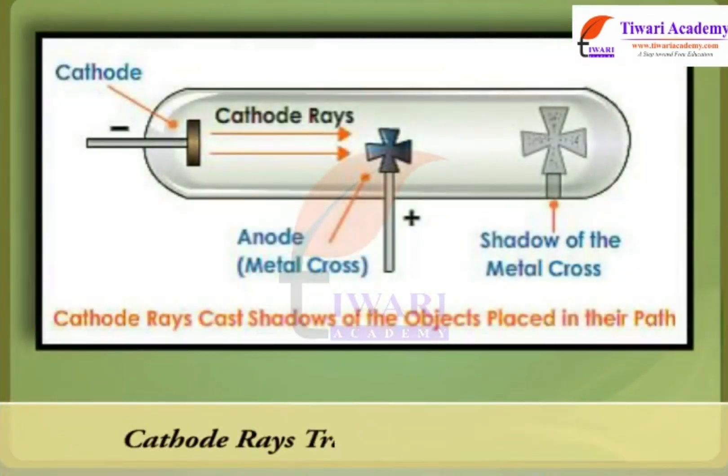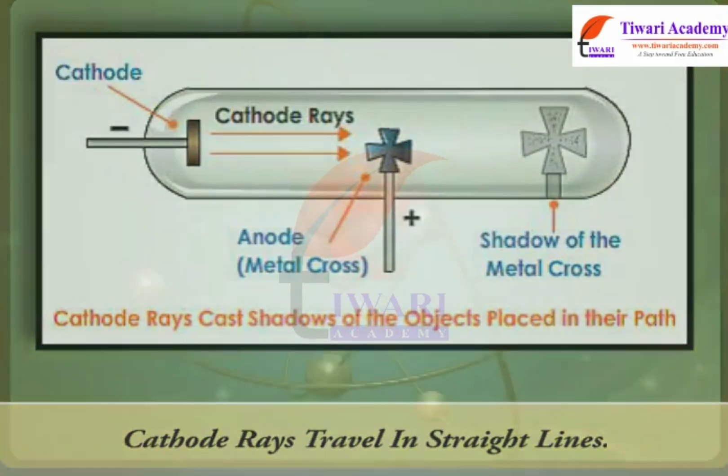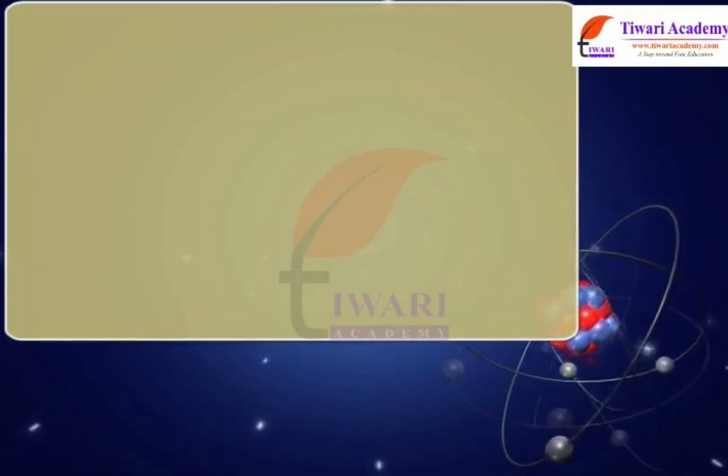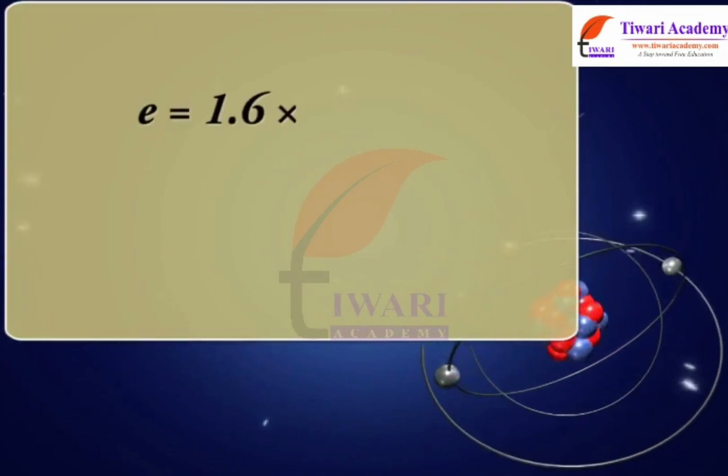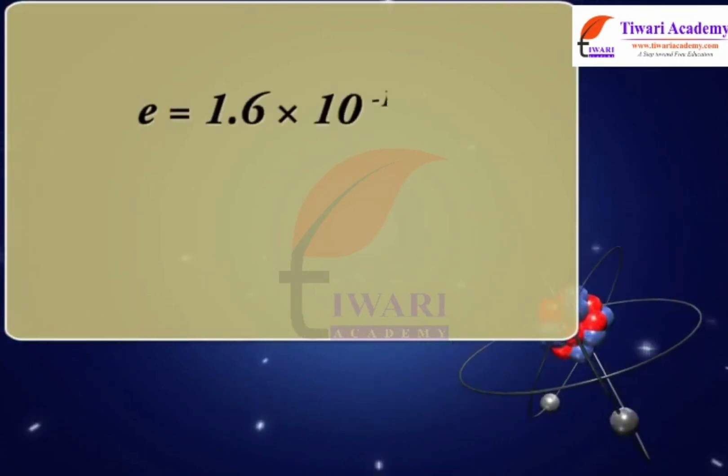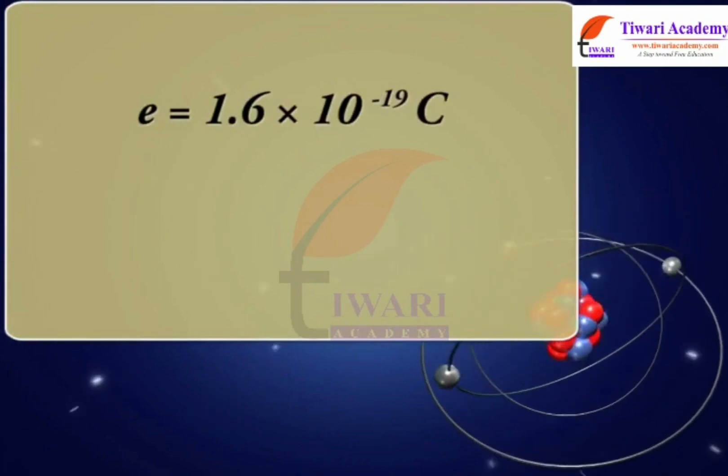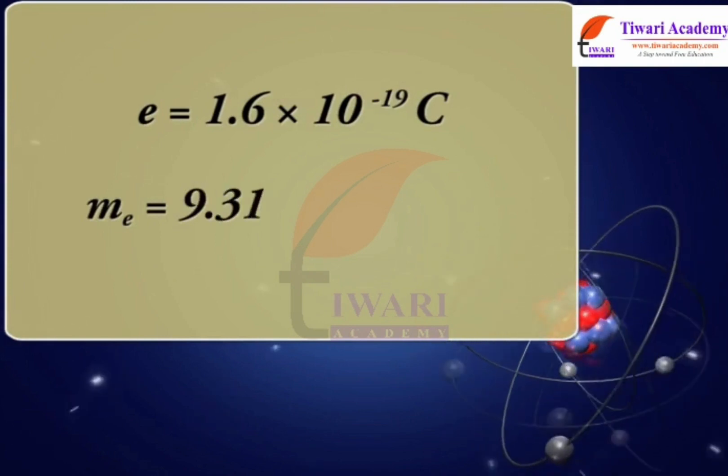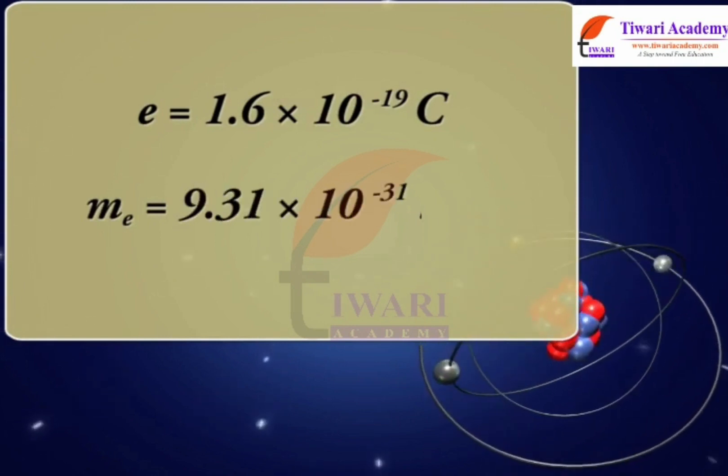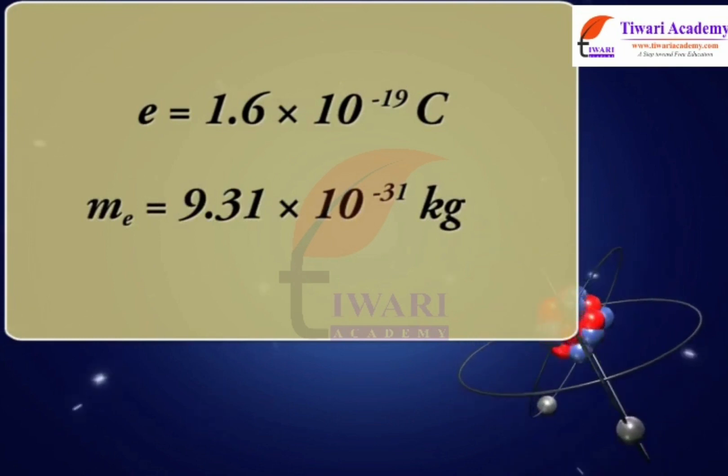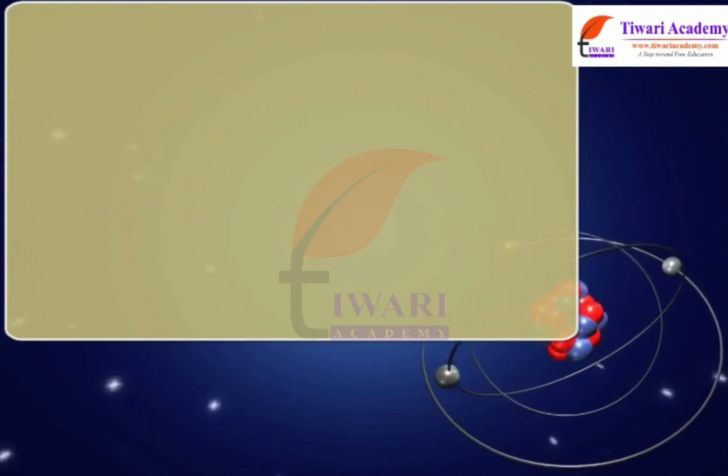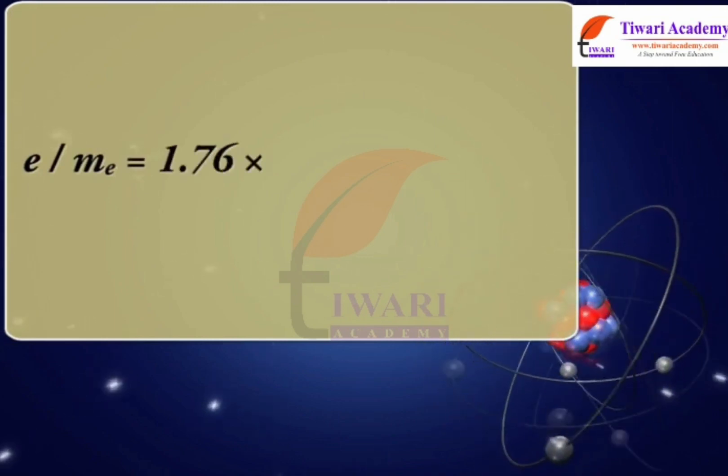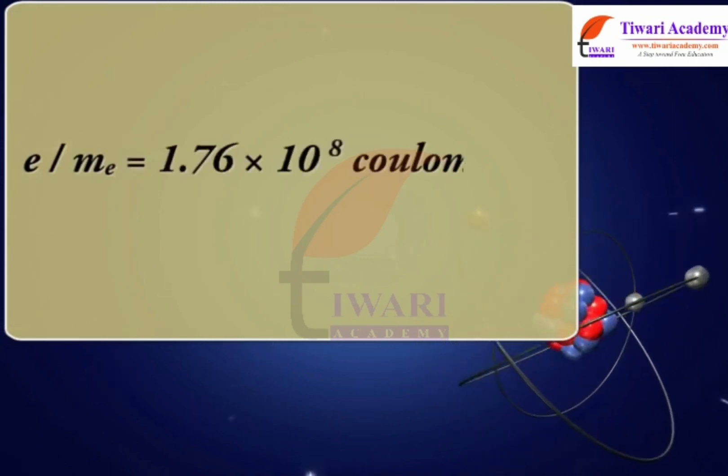Cathode rays travel in straight lines. The charge on an electron E is equal to 1.6 into 10 raised to the power minus 19 coulombs. Mass of the electron Me is equal to 9.31 into 10 raised to the power minus 31 kg. The value of E upon Me was found to be 1.76 into 10 raised to the power 8 coulombs upon gram.